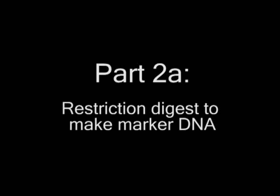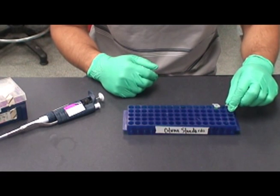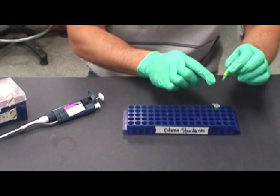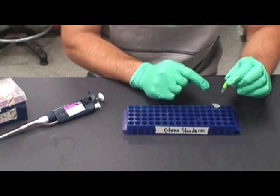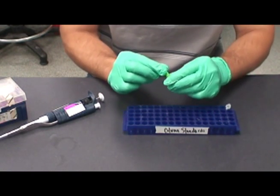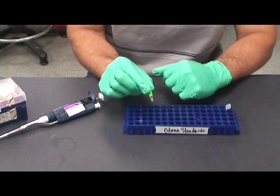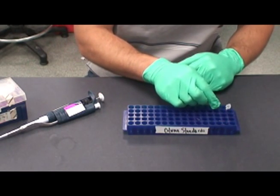The first step in performing restriction digest to make marker DNA is to label two 0.5 milliliter microfuge tubes. This tube is labeled Lambda DNA Hindi 3, while this tube is labeled Lambda DNA undigested. Make sure to include your initials on both tubes.